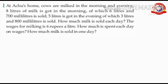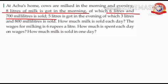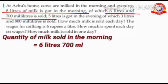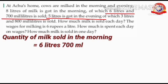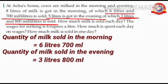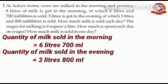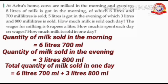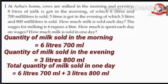Next, we have to find out the quantity of milk sold in one day. You know that 8 liters of milk is got in the morning, of which 6 liters and 700 milliliters of milk is sold. So, quantity of milk sold in the morning equals 6 liters 700 milliliters. Next, 5 liters of milk is got in the evening, of which 3 liters and 800 milliliters of milk is sold. So, quantity of milk sold in the evening equals 3 liters 800 milliliters. To find out the total quantity of milk sold in one day, add: quantity of milk sold in one day equals 6 liters 700 milliliters plus 3 liters 800 milliliters.